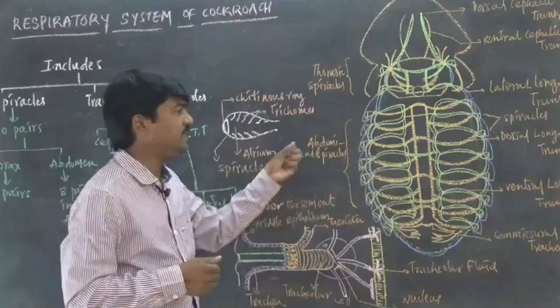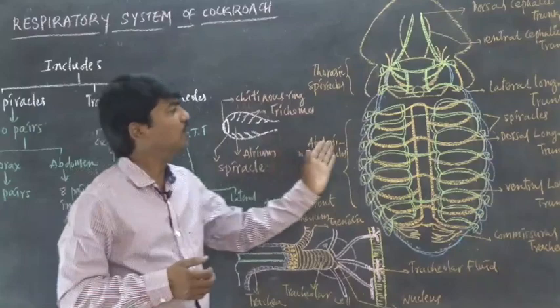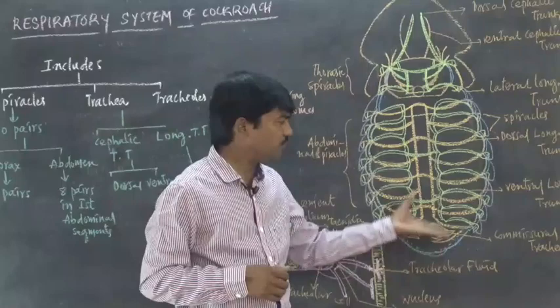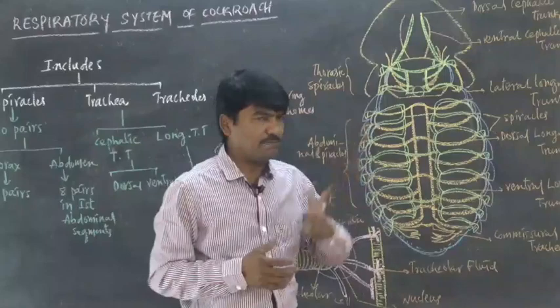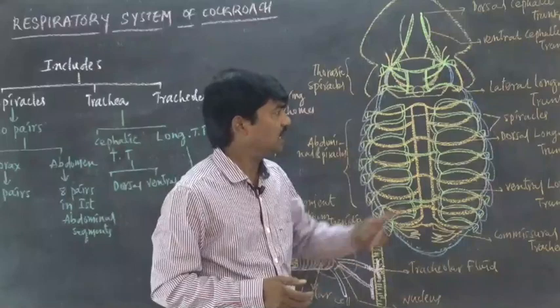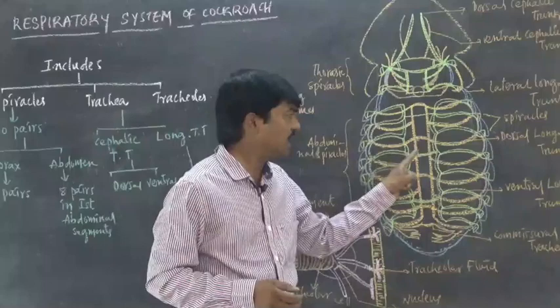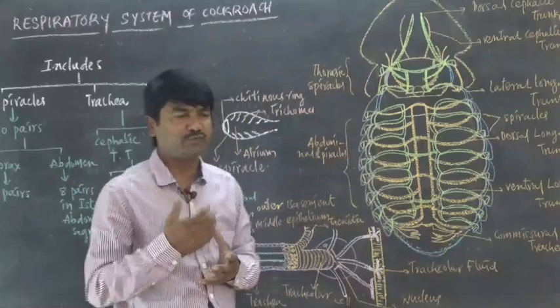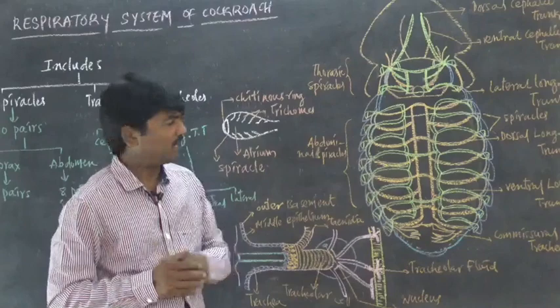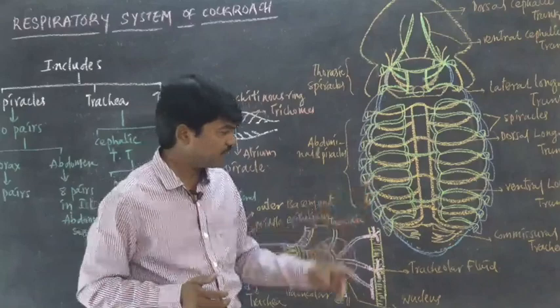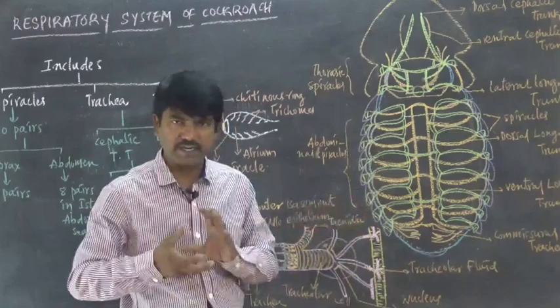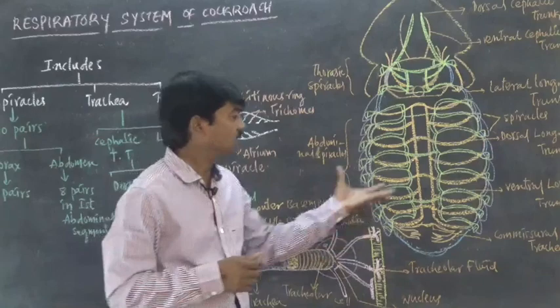In the abdominal region, eight pairs of abdominal spiracles are present. Each spiracle opens into the atrium, and the atrium opens into the tracheal trunks. These tracheal trunks are arranged longitudinally from the anterior end to the posterior end, hence called longitudinal tracheal trunks. There are three types: laterally arranged, dorsally arranged, and ventrally arranged longitudinal trunks. All tracheal trunks are interconnected by commissural trachea, which serve as interconnecting links between the longitudinal tracheal trunks.